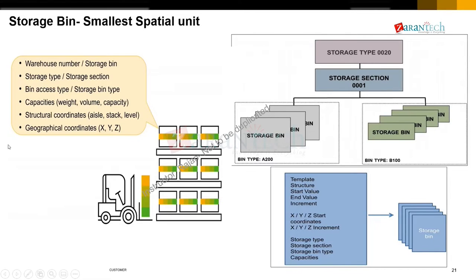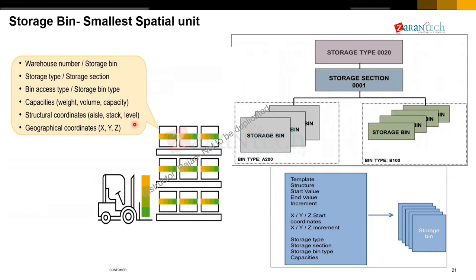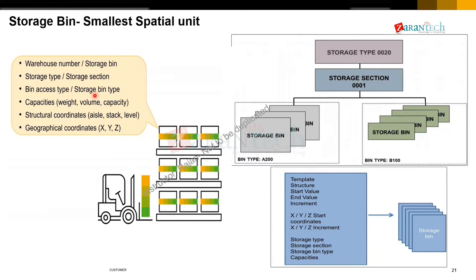In the bin master, the important fields are bin type and bin access type — don't confuse the two. The bin type brings in dimensions — volume, weight — and neutral capacity can be given via the bin type or directly assigned to the bin master. Bin access type controls whether a particular resource can access a specific level. For example, a reach truck can go to level six whereas a forklift can only go to level three or four.